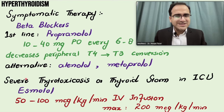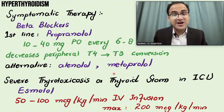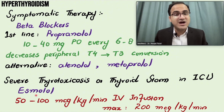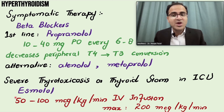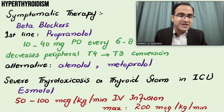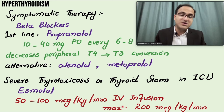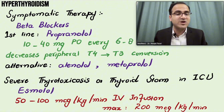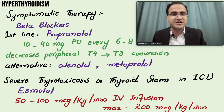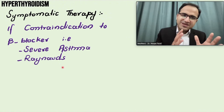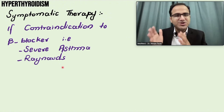If the patient is having severe thyrotoxicosis or thyroid storm and is admitted in the ICU, you can use IV infusion of esmolol at 50 to 100 micrograms per kg per minute, with a maximum dosage of 200 micrograms per kg per minute.